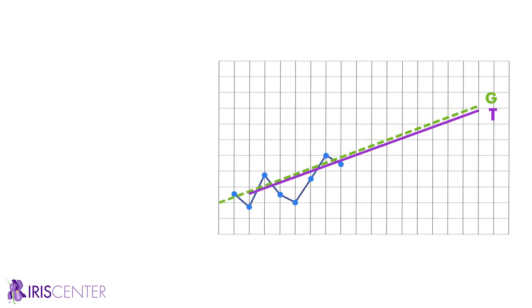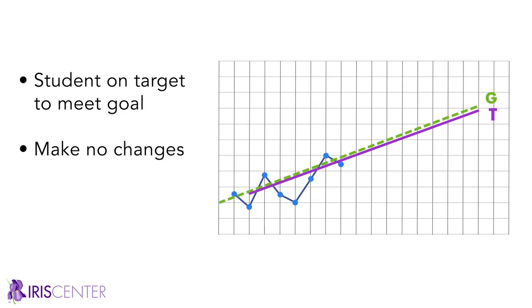Finally, if the trend line is around the goal line, the student is on target to meet the goal. No changes to instruction are necessary at this time and the educator should continue collecting data.